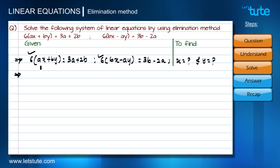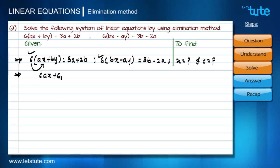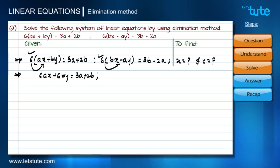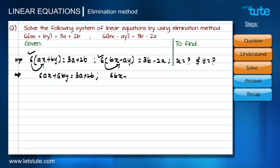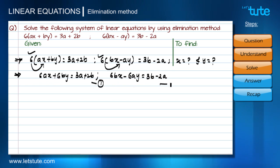Let's write these two equations properly by opening the brackets so that six is multiplied with both terms. This gives: 6ax + 6by = 3a + 2b. Similarly, for the second equation, opening the bracket gives: 6bx − 6ay = 3b − 2a. Let's label these as equations one and two.